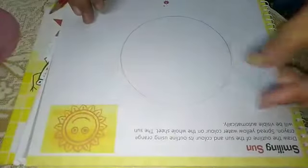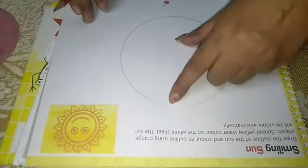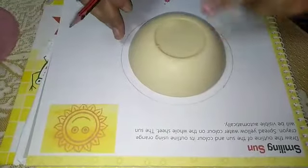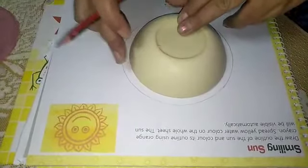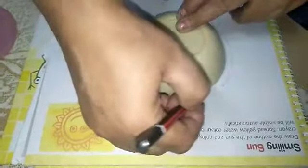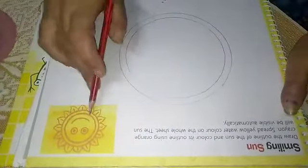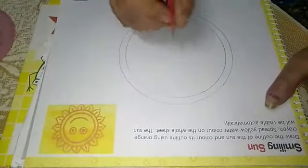Afterward take any more round thing to make inside circle. I have taken one bowl. You can take anything. Now make one more circle here. Now both circles of our sun are ready. Now we will make the eyes of sun.